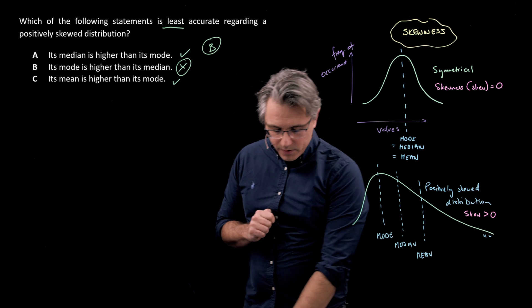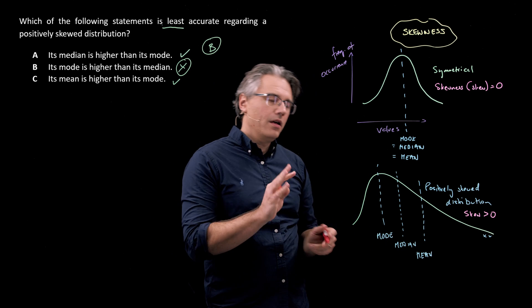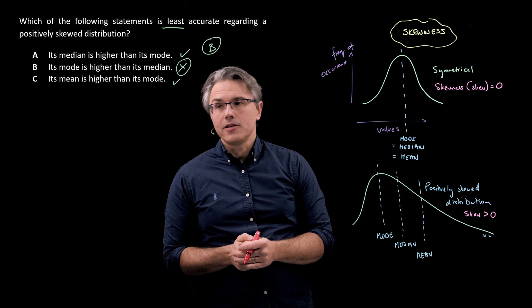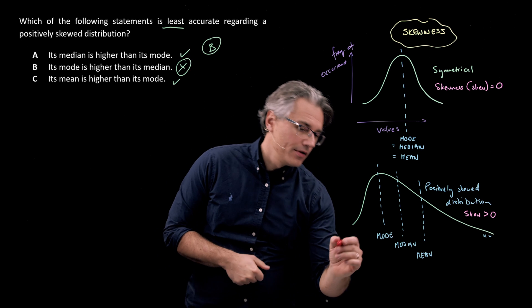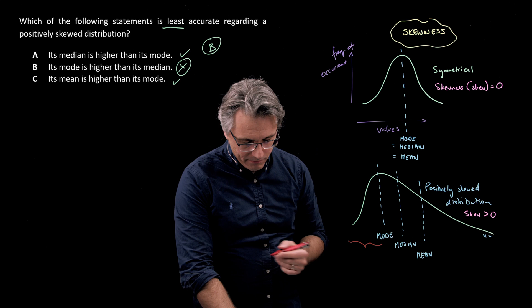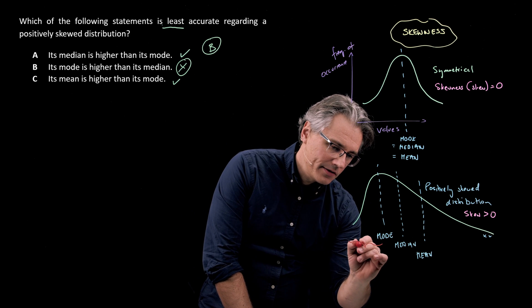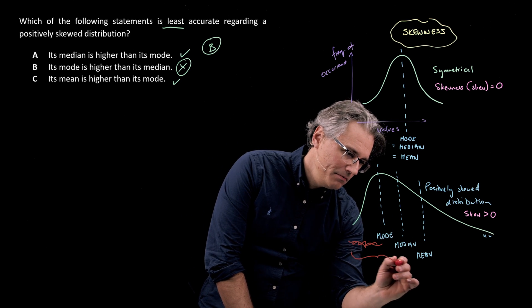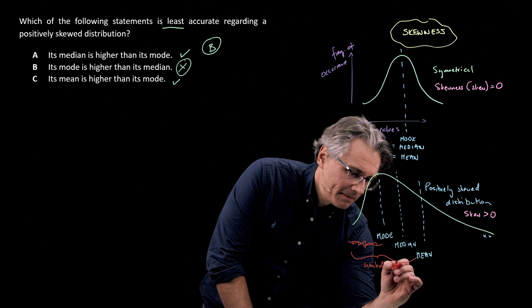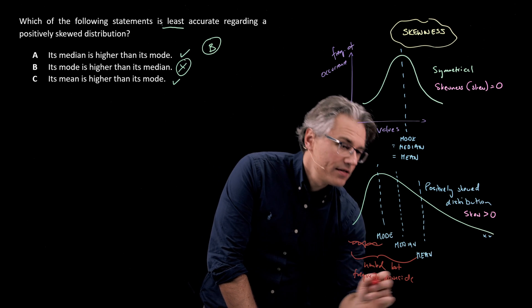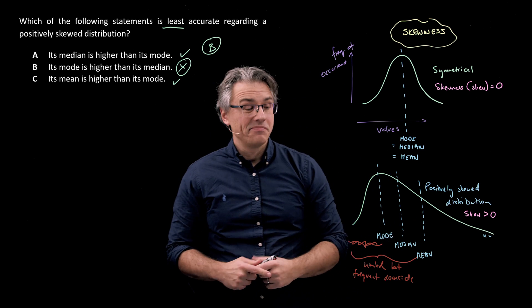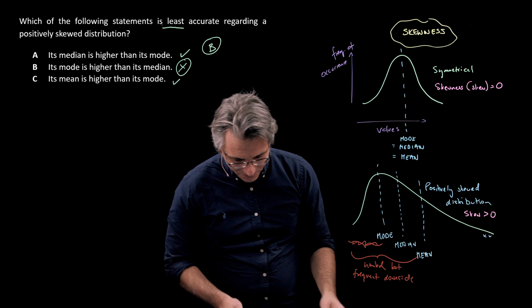Okay, let me just tell you a little bit more about what conclusions you may associate with a positively skewed distribution. To the left of the mean, you've got limited but frequent downside. So results which are less than the mean - they're quite frequent, but in terms of their magnitude they're limited.